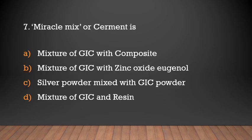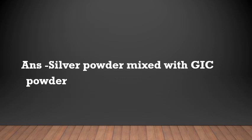Miracle Mix or Cermet is: (a) mixture of GIC with composite, (b) mixture of GIC with zinc oxide eugenol, (c) silver powder mixed with GIC powder, (d) mixture of GIC and rosin. Answer: Silver powder mixed with GIC powder.